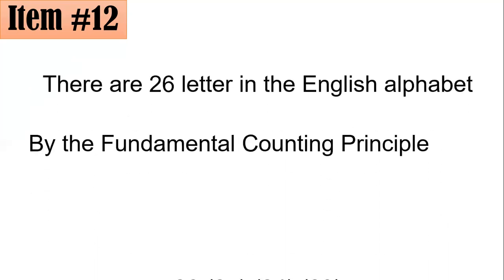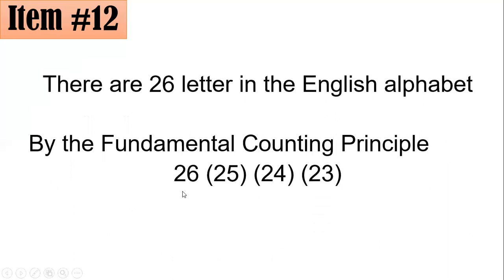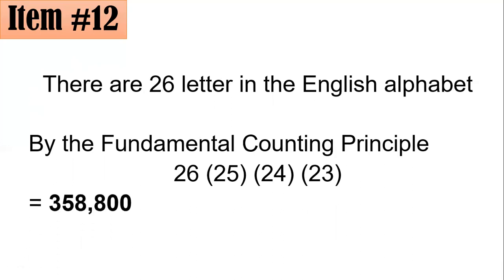By the fundamental counting principle, you could use 26 choices for the first slot. If you used one, you have 25 for the next, because repetition is not allowed. Then 24 for the third, and 23 for the fourth. The product of 26, 25, 24, and 23 is 358,800 — letter C.